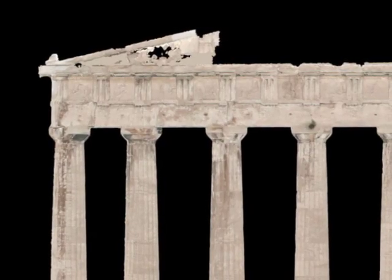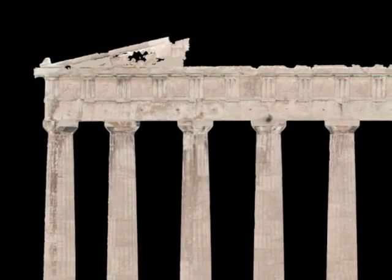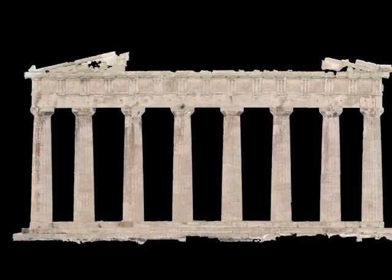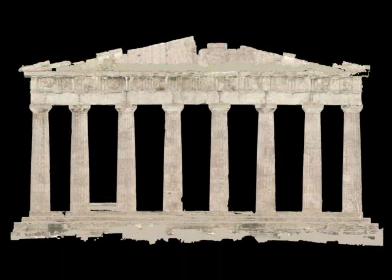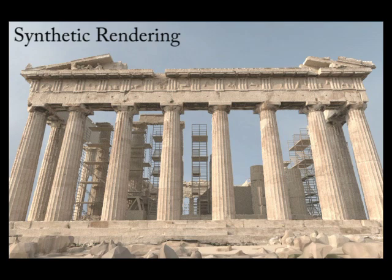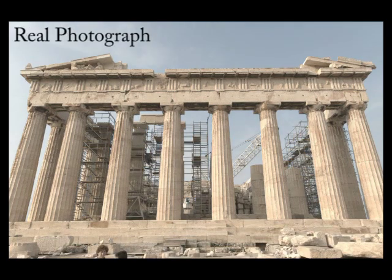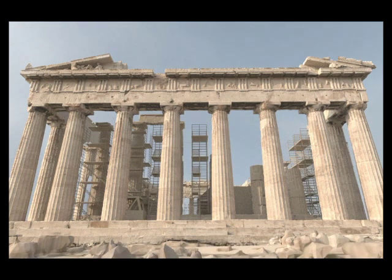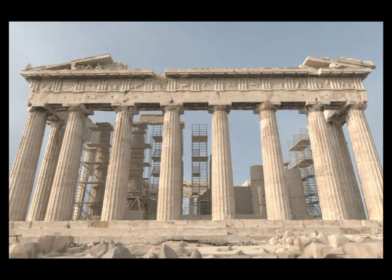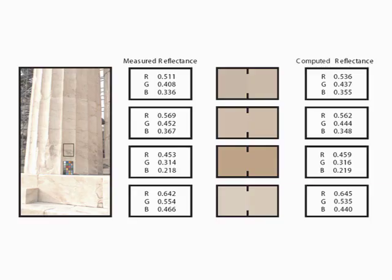We applied this process to both the east and west facades of our model, deriving lighting-independent surface reflectance maps for each. With the reflectance properties recovered, we can render the scene from new viewpoints and new illumination conditions. Here we see a real photograph compared with the synthetic rendering of the model, made using lighting captured at the same time as the photograph. These comparison photographs are one indication that the reflectance properties derived are largely accurate. In the paper, we also compare results to the ground truth reflectance measurements.